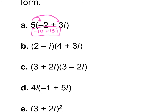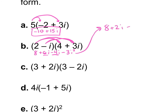For example B we FOIL since we have two binomials: multiply the first, outsides, insides, and last, giving minus 3i squared. Combine like terms: 8 plus 6i minus 4i minus 3i squared gives 8 plus 2i minus 3i squared. Since i squared equals negative 1, that's 3 times negative 1 equals negative 3, and negative 3 times negative 1 becomes positive 3. So 8 plus 3 is 11, plus 2i. Answer is 11 plus 2i.